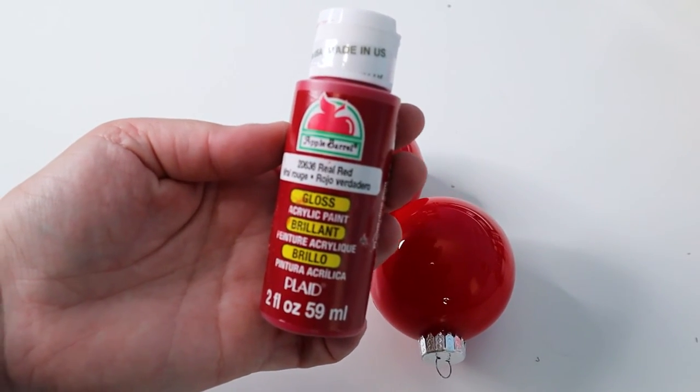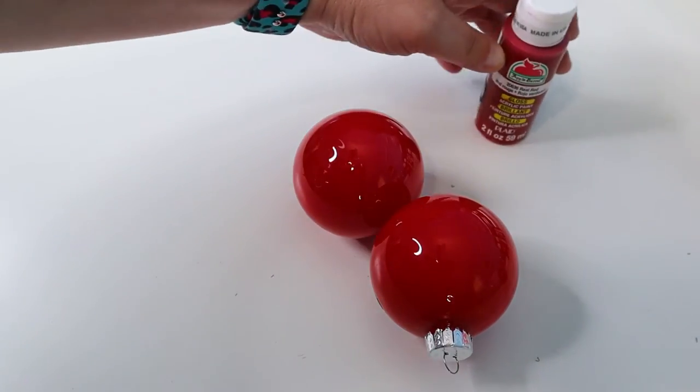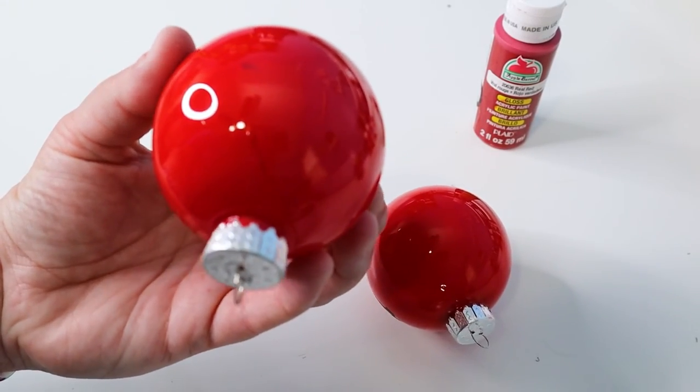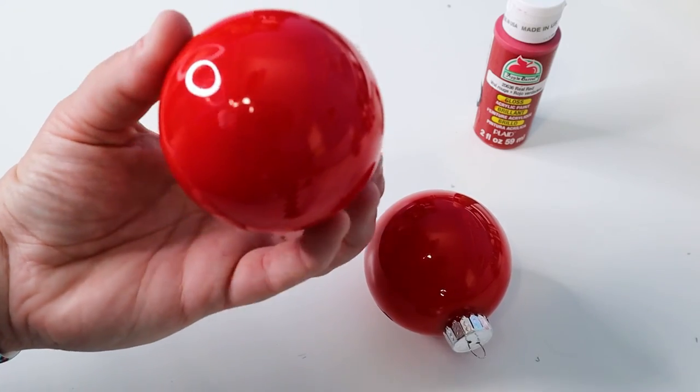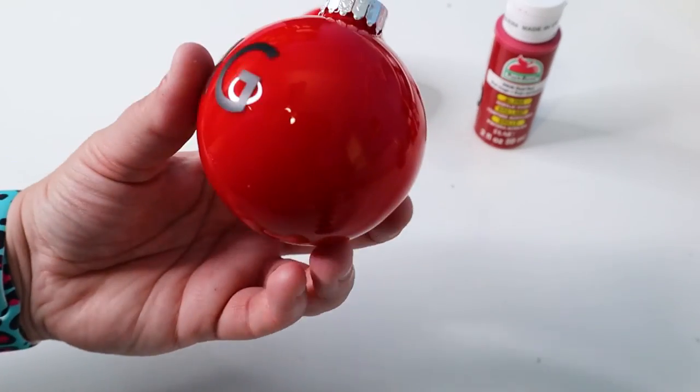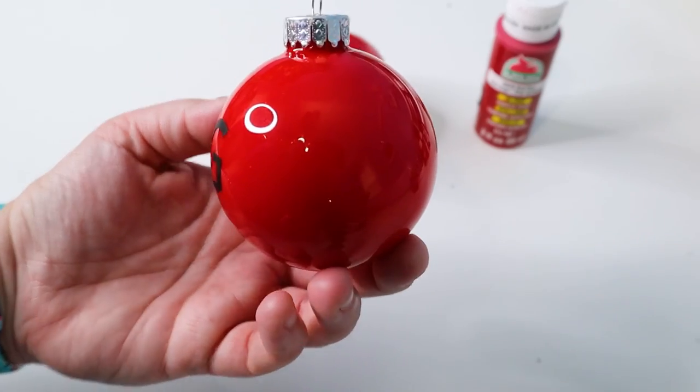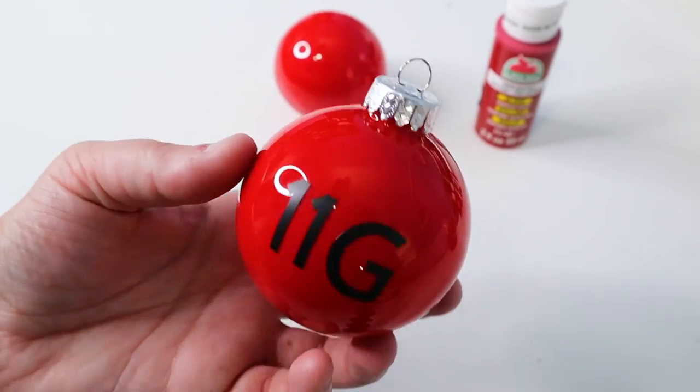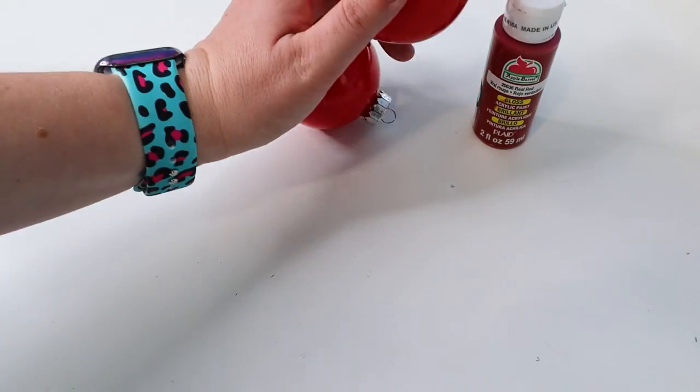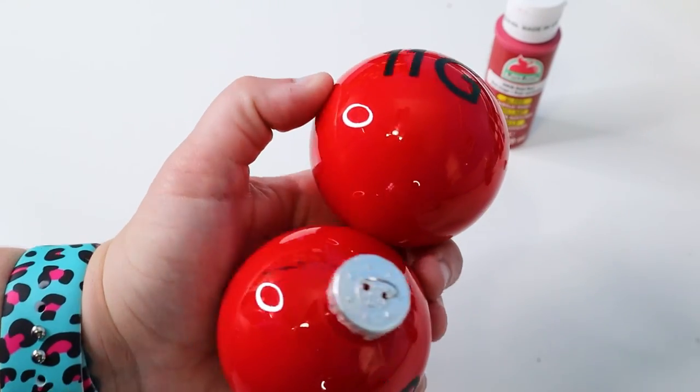Number eleven is Apple Barrel gloss acrylic paint. This is in the color real red. Taking a look at our plastic, we have a little bit of paint cracking right there on the back, but not too much. Just a little. Doesn't look too bad. Let's take a look at glass. I'm not seeing anything on glass. Glass looks really, really nice. It looks like it really held up very, very well on the glass. So I would say with the eleven stick with a glass ornament and not plastic. The plastic does just have a little bit of that paint cracking where the glass one doesn't have any of that.